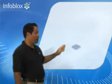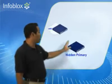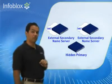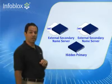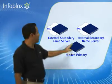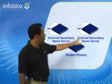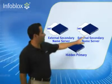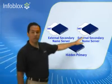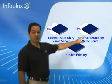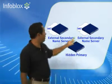What you see here is a very simple diagram showing one, two, three name servers as part of an external authoritative name server infrastructure. This one down here is the hidden primary, and these two out on two different DMZs are external secondary name servers. These are the ones that handle the heavy lifting of responding to non-recursive queries from name servers out on the internet.